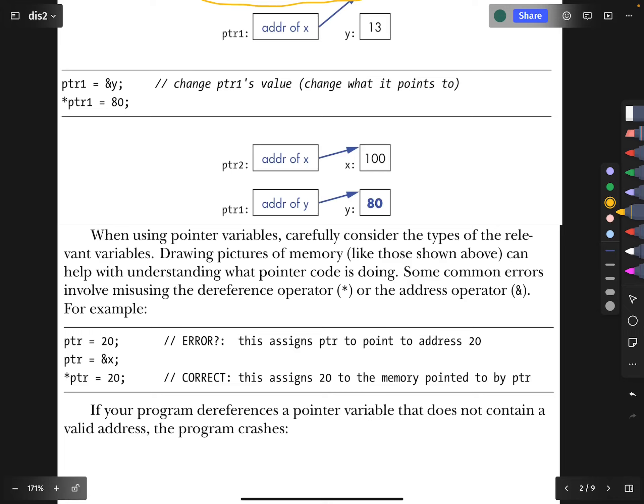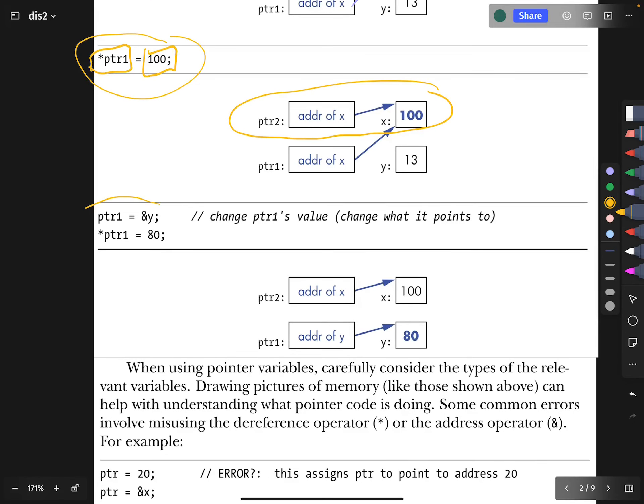What do we do next? Next, we take pointer one. We give it the variable y. So now pointer one is pointing to y. We dereference it and give it the value 80. So that explains what's going on in the diagram.